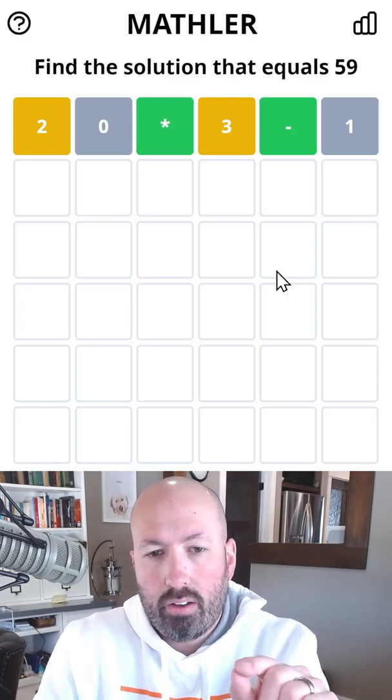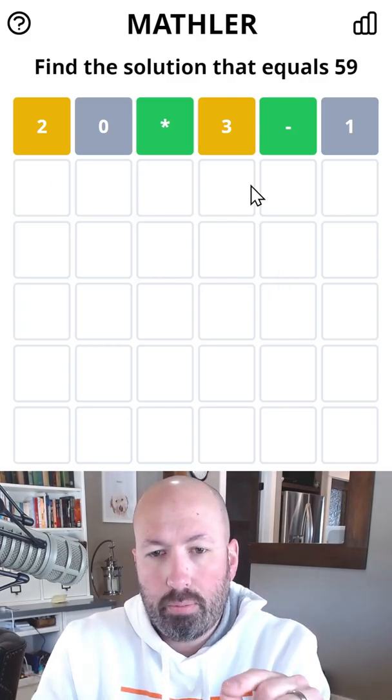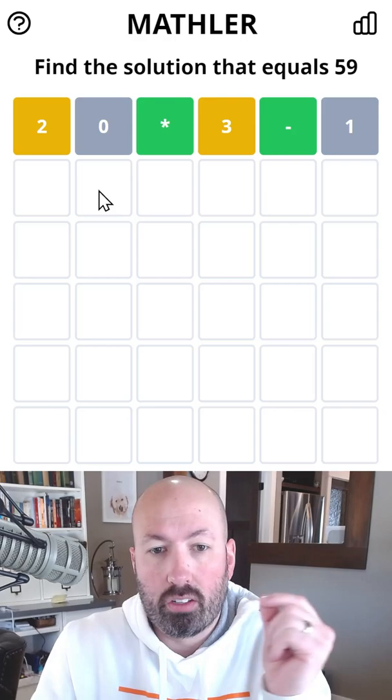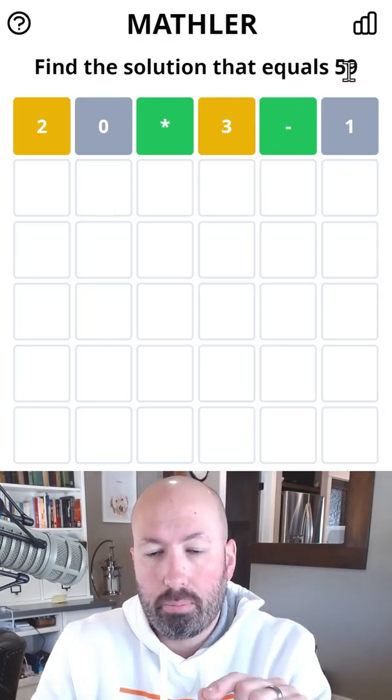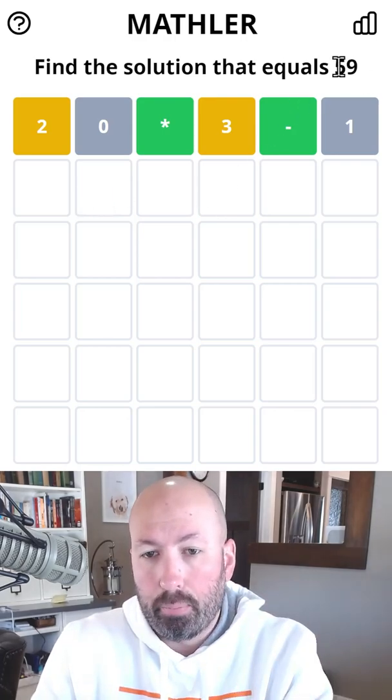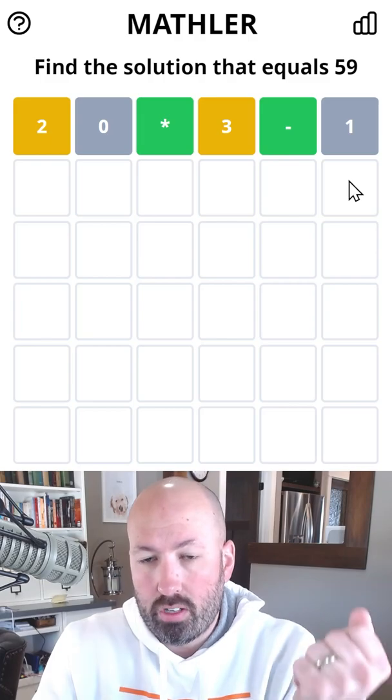Okay, so we need to have a two-digit number times something minus a single digit, which means the two-digit times the single digit has to be less than 59 plus 9, because we can only subtract at most 9, so 68.